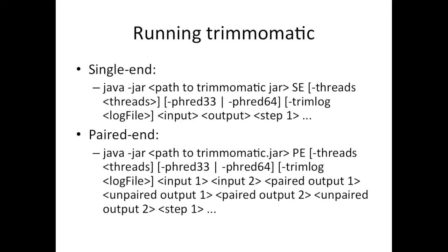To run Trimmomatic, there are two different modes: single-end mode or paired-end mode. Since it is a Java program, you call Java, then jar, then the path to Trimmomatic. If you're doing single-end, you specify single-end. You can indicate the number of threads to be used, and then you must indicate the quality scores being used, whether it's Phred33 or Phred64. This program does not automatically detect — it will assume Phred64 if you don't specify, but in most cases you're probably working with Phred33 quality, so be sure to indicate which quality scores you're working with.